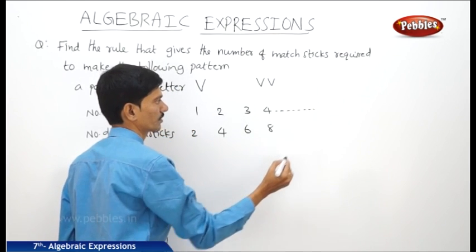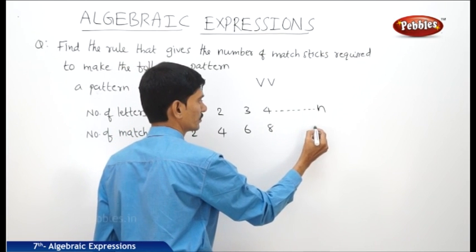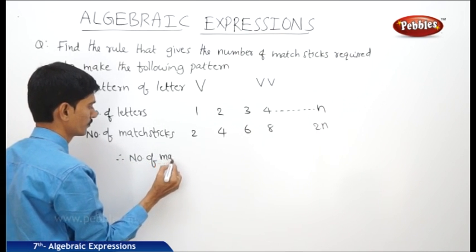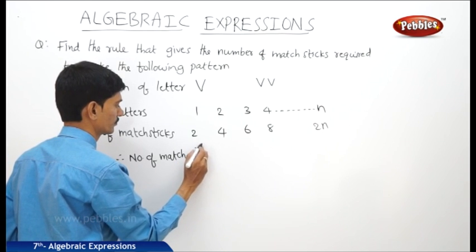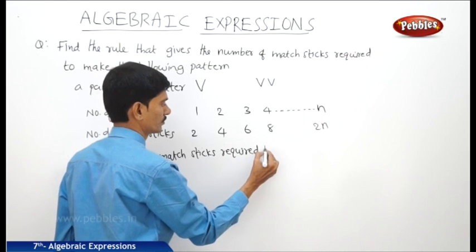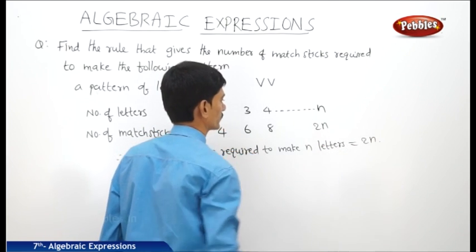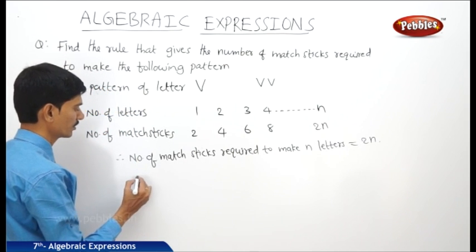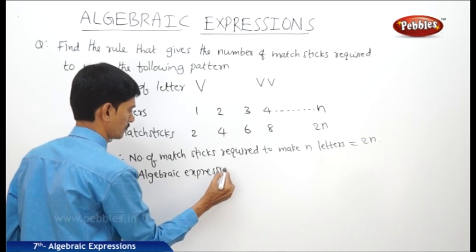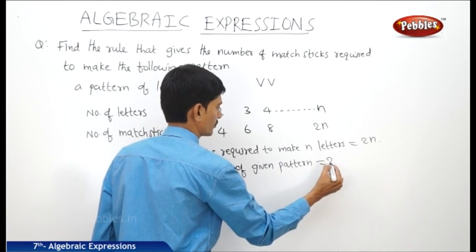Similarly, to make n letters in the same pattern, these are all even numbers and multiples of the natural numbers. Therefore we can write that the number of match sticks required to make n letters equals to 2n. So the algebraic expression for the given pattern is 2n.